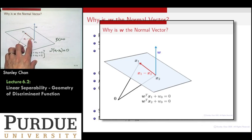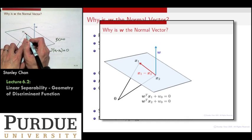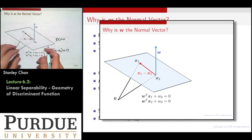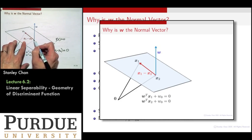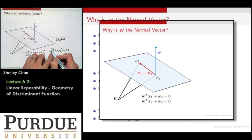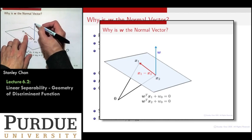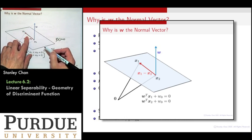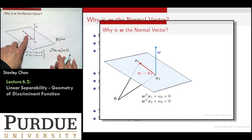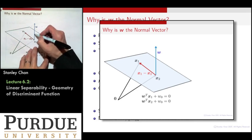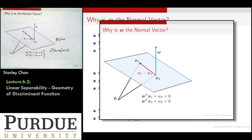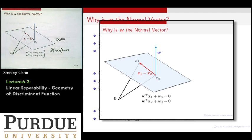Going back to the diagram — what is x_1 minus x_2? It's just this red vector, since both x_1 and x_2 live on that plane. Now you take the inner product of w and this red vector, and that equals 0. That means w has to be orthogonal to this red vector. Since x_1 and x_2 are any two arbitrary points on the plane, w is orthogonal to the entire plane. That shows that w is indeed the normal vector. Then we divide by its norm to get unit norm.